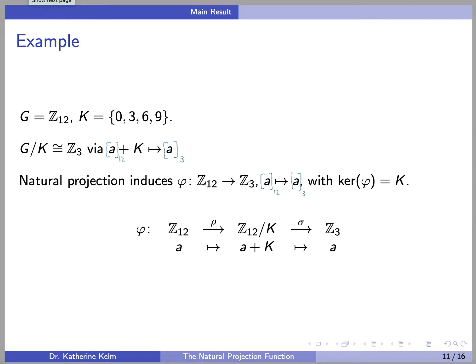Then the natural projection induces phi from Z12 to Z3, which sends A to A — where A in Z12 gets sent to A in Z3. You should convince yourself that the kernel of phi is actually equal to K. In more detail, phi is sigma after rho: rho takes A to the coset A plus K, then sigma sends A plus K to A, so the composition takes the class of A mod 12 to the class of A mod 3.